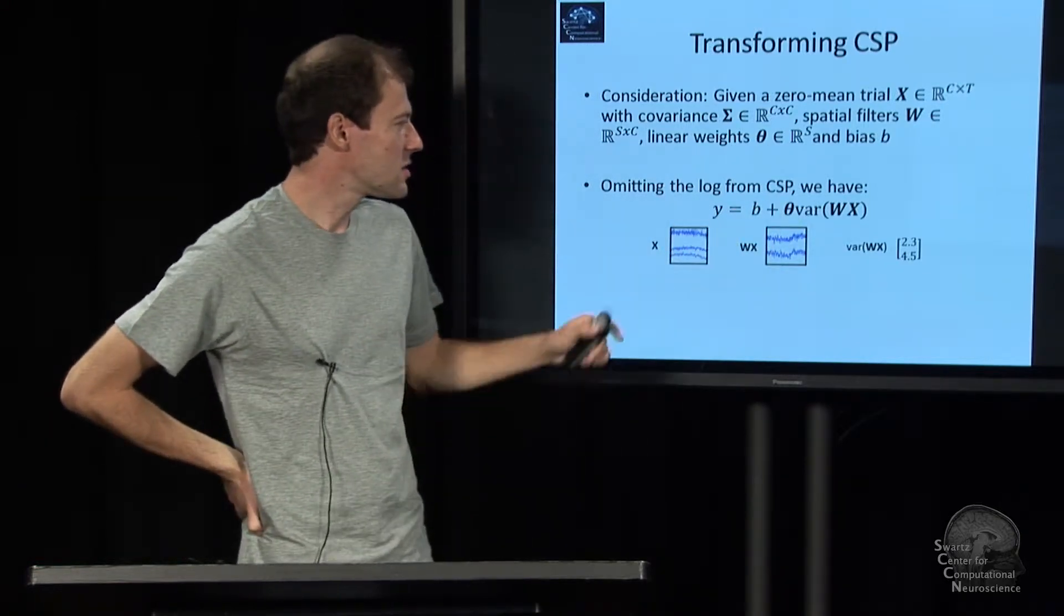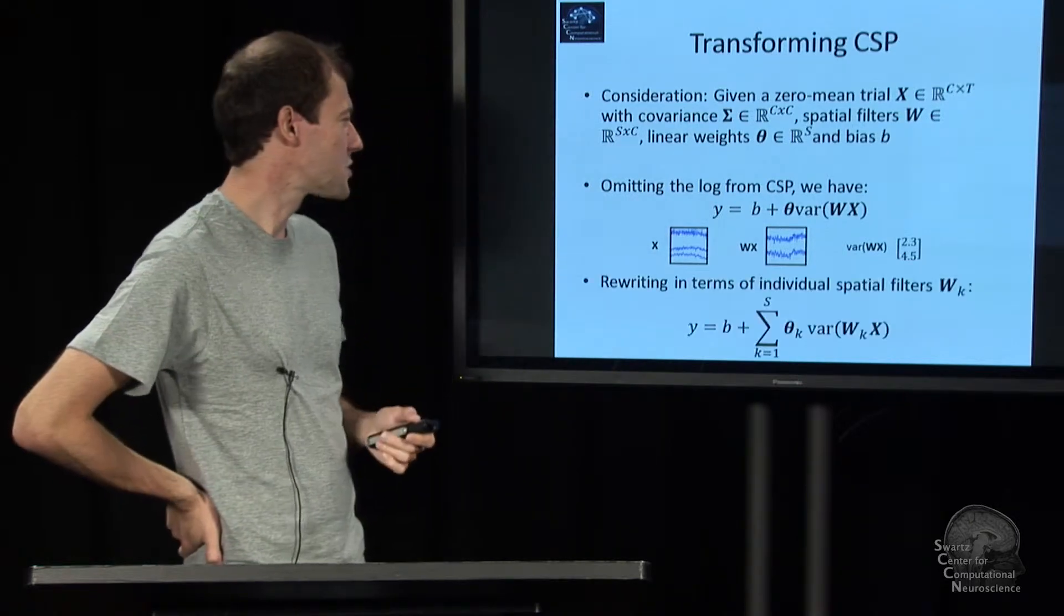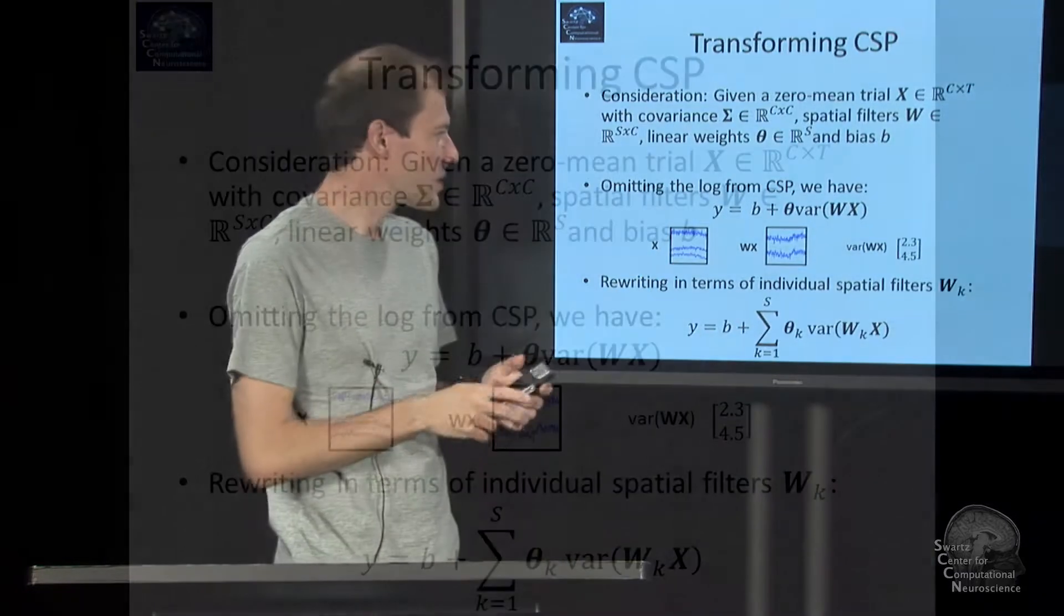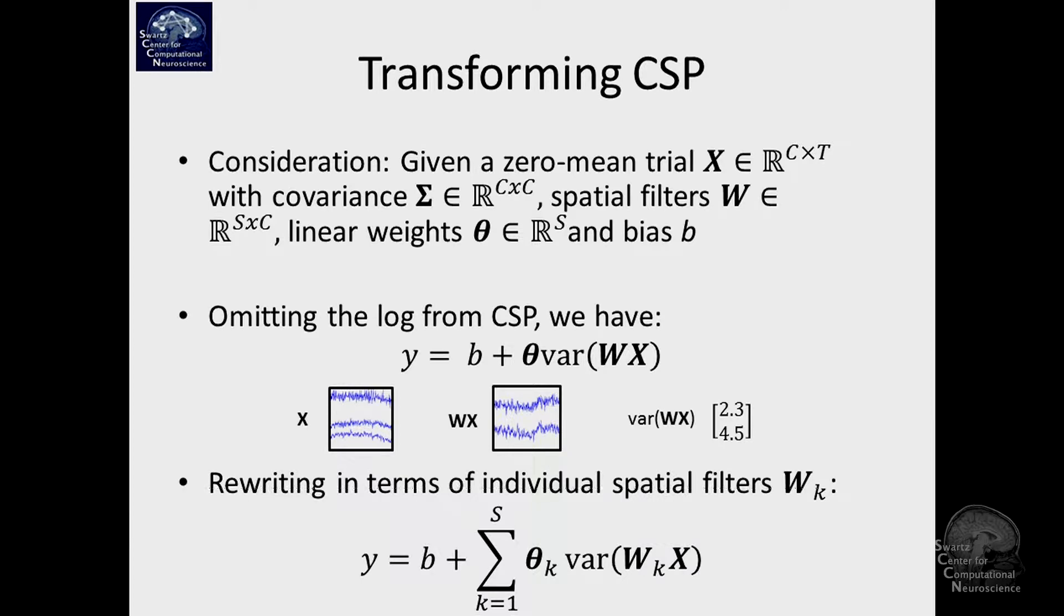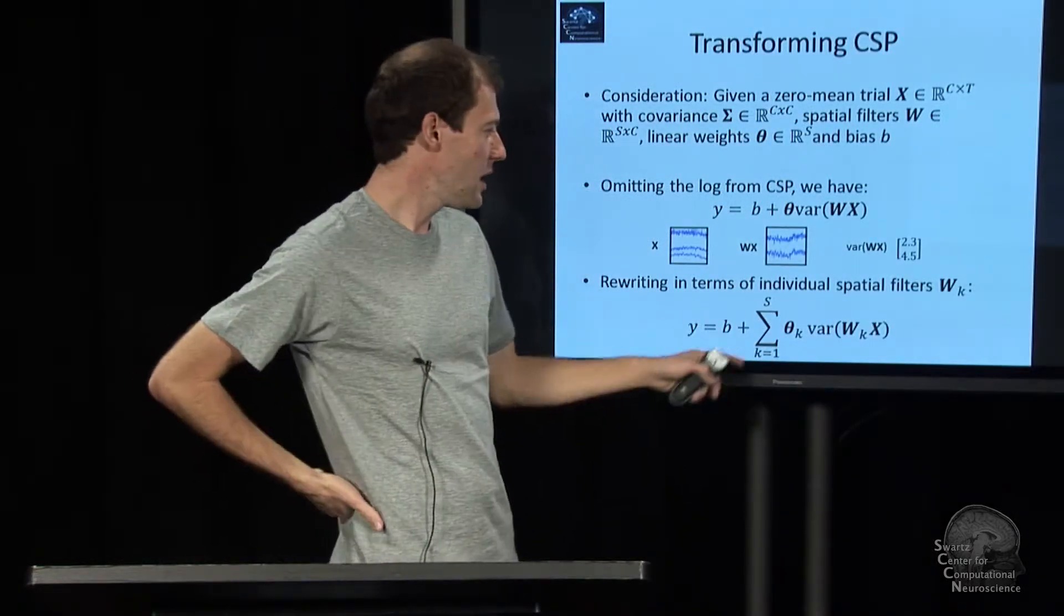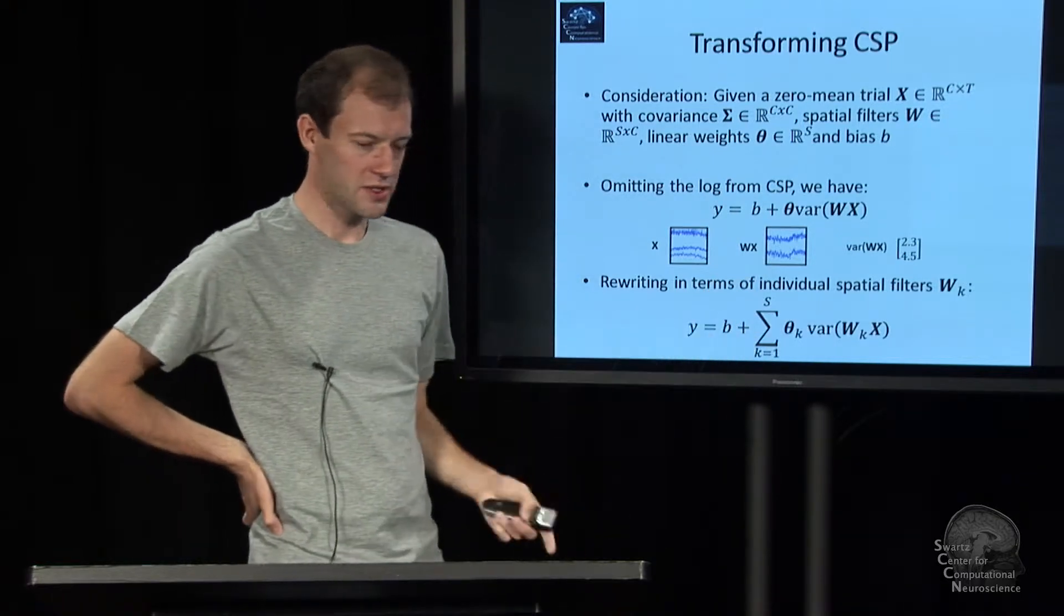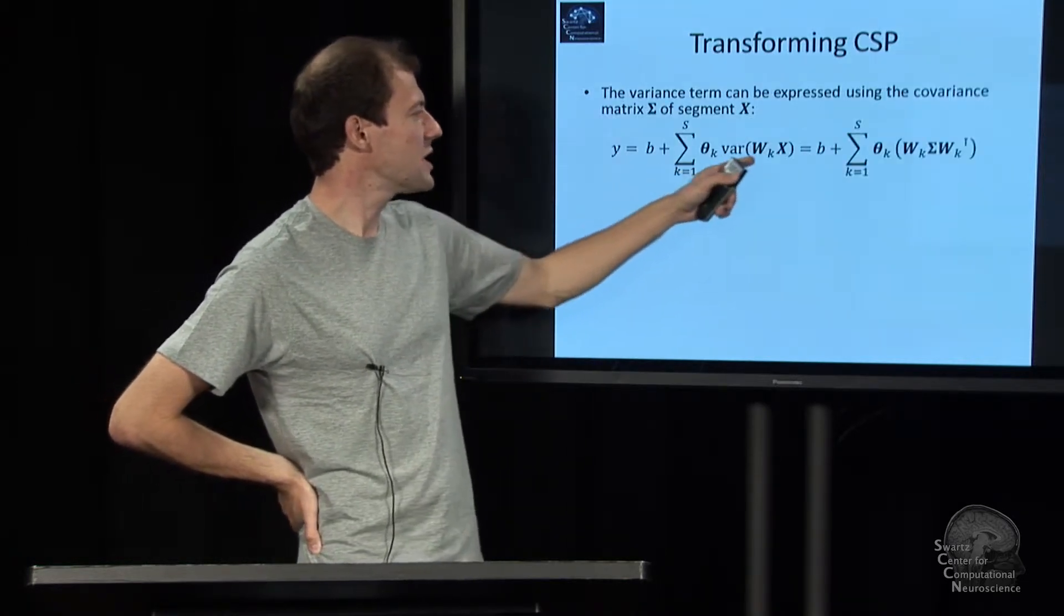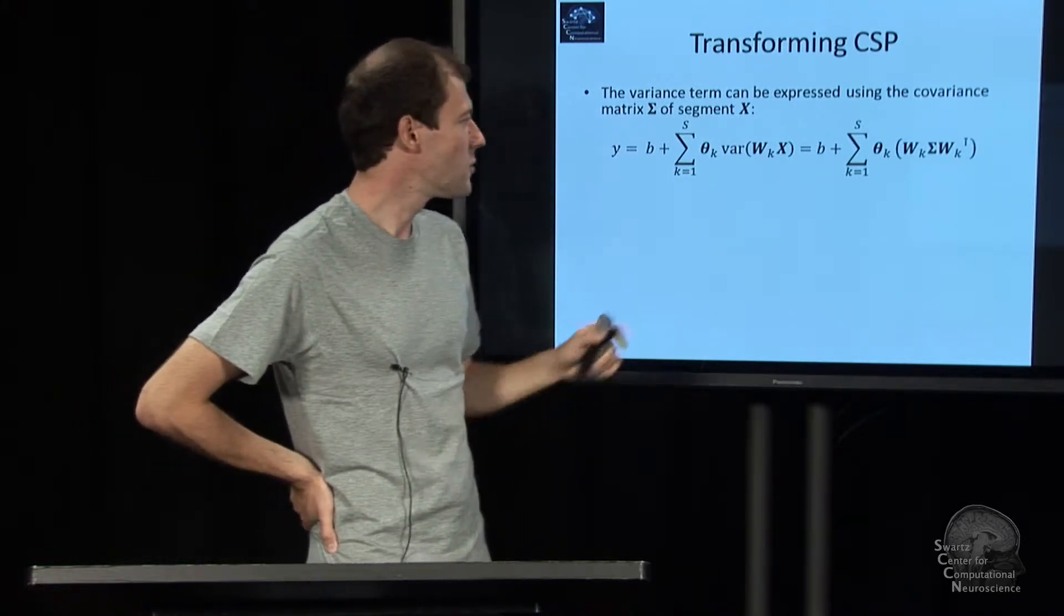We'll transform this a little bit. The first step is instead of taking the variance of this matrix product and doing inner product with that, we can rewrite it. First we take the data and multiply it with one spatial filter vector, take the variance of that component, then multiply it with the associated linear weight, and sum it all up over all K and add the bias. That's the same as if you had done it in matrix form.